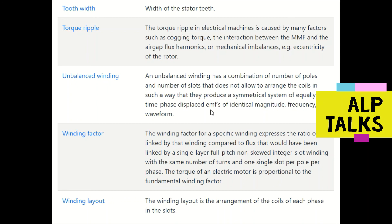Winding factor for a specific winding expresses the ratio of flux linked by the winding compared to what would have been linked by a single-layer, full-pitch, non-skewed integer slot winding with the same number of turns and one slot per pole per phase. The torque of an electric motor is proportional to the fundamental winding factor. Winding layout is the arrangement of coils of each phase in the slots.